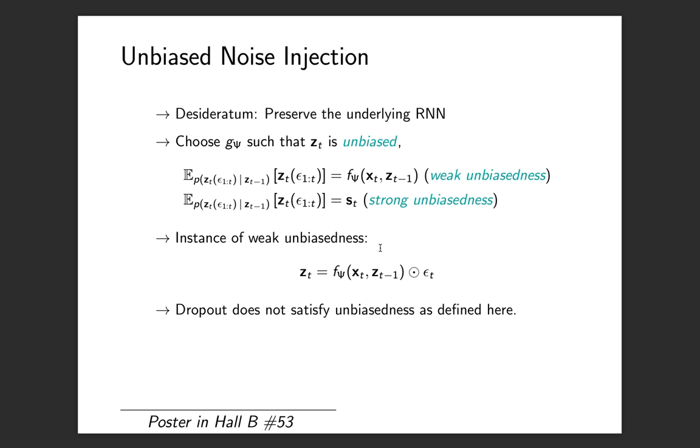The way you achieve, for example, strong unbiasedness is to inject the noise at the final layer. The way you achieve weak unbiasedness is to use multiplicative or additive noise. You just have your transition function and multiply by the random noise epsilon_t. If you want to use additive noise, then you would replace this Hadamard product with addition.